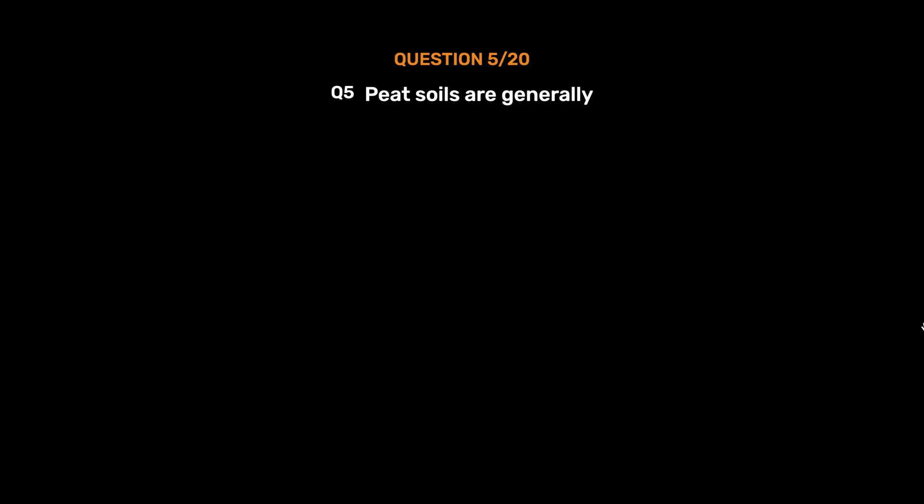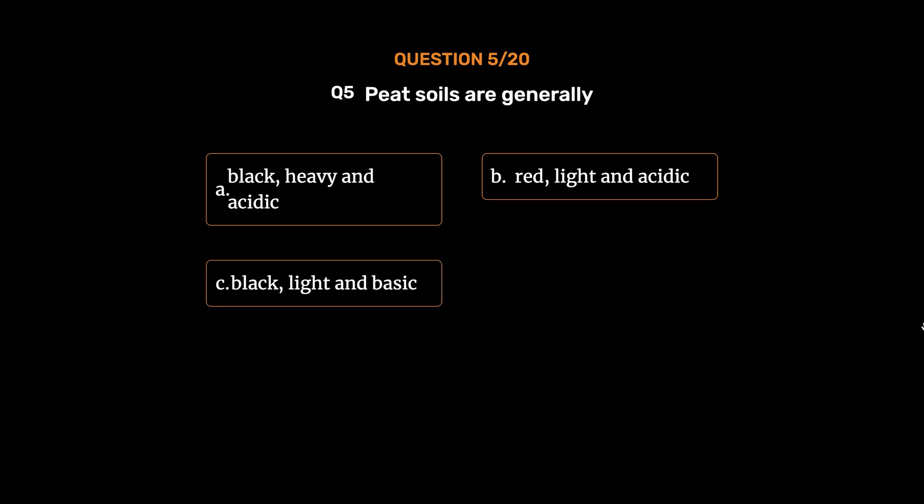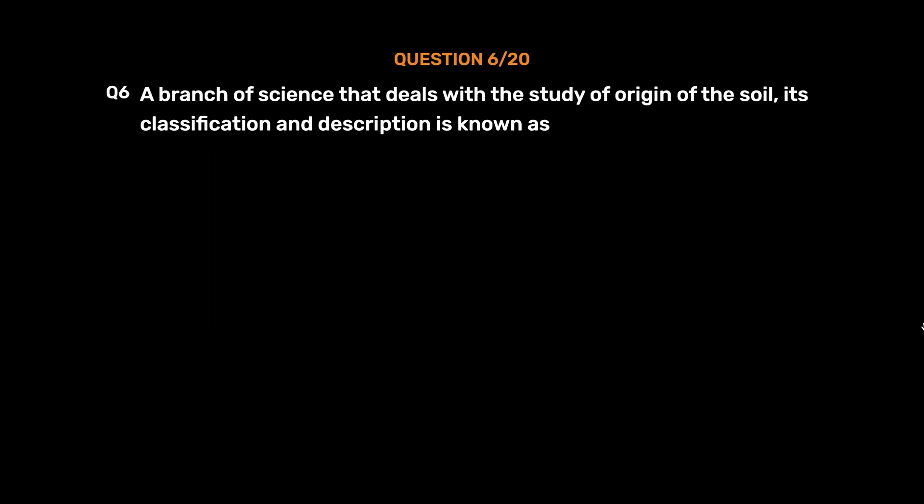Question number 5. Peat soils are generally: option A, Black, heavy and acidic; option B, Red, light and acidic; option C, Black, light and basic; option D, Black, heavy and basic. The correct answer is option A, Black, heavy and acidic.